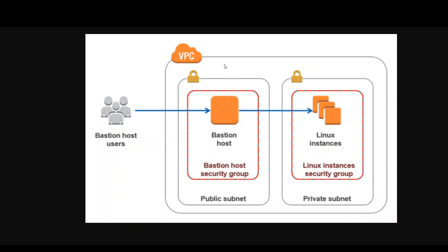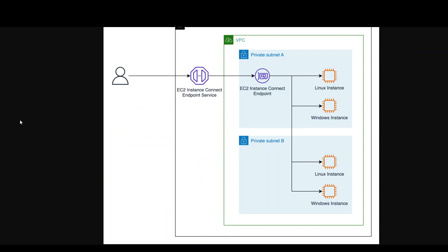For this, AWS has released a managed service called EC2 Instance Connect Endpoint service. Instead of you managing a bastion host, AWS provides this EC2 Instance Connect — or EIC — endpoint service. You simply connect to this service and from there access your Linux or Windows based instances in the private subnet. This removes the need to manage an extra EC2 instance as a bastion host. You don't pay for the bastion, and while you do pay for this endpoint, it is much cheaper than maintaining a bastion host.